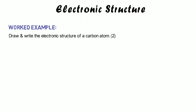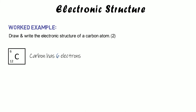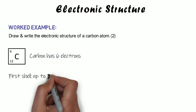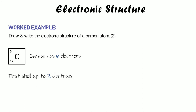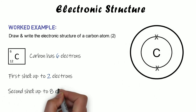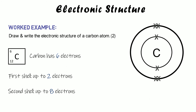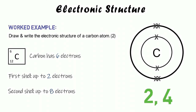For our worked example, we'll look at a carbon atom. Carbon has an atomic number of six, which means it has six protons and therefore six electrons. The first shell can hold up to two electrons, so we draw our first shell and put two electrons in it. We've placed two already and it has six total, so we need another shell. That second shell can hold up to eight, but we only have four left. So we put four in the second shell. We would write that structure as 2,4 — that is the written electronic structure for carbon.